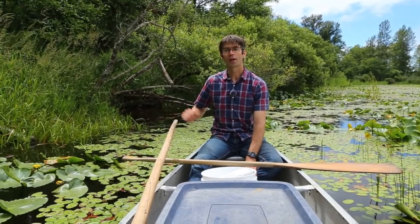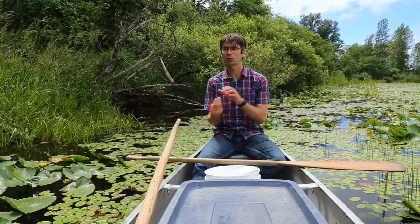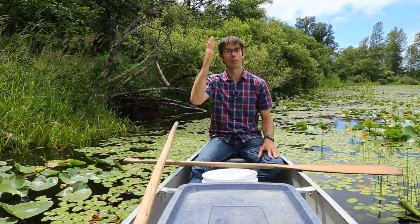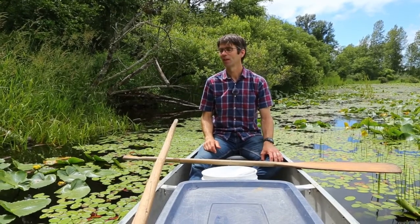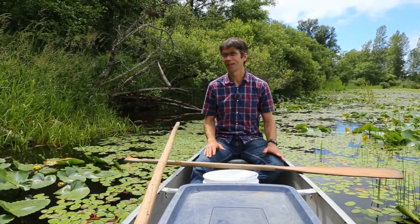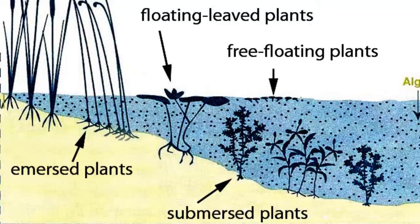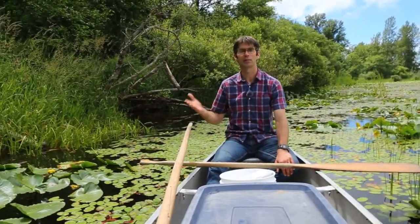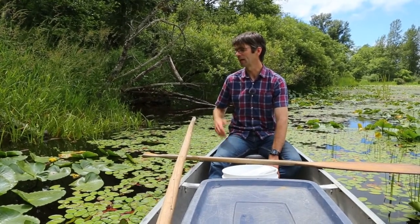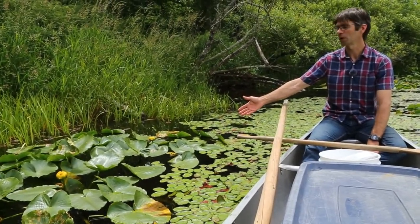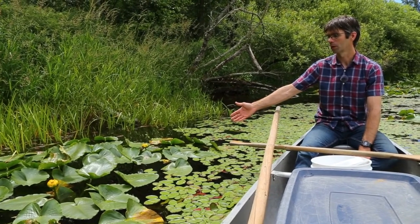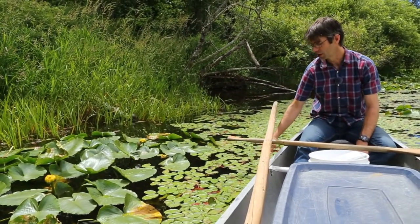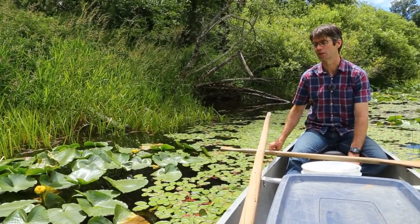In areas with deeper water — so deep that the plants can't be rooted to the bottom and rise up above the water — we have plants that are attached to the bottom and just rise to the surface and float. That's the floating leaf zone. Probably the most important floating leaf plant is Nuphar polysepala, the yellow pond lily. This marsh also has a really healthy layer of some other floating leaf plants that I'll talk about in a second.